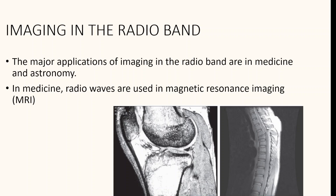The major applications of imaging in the radio band are in medicine and astronomy. In medicine, radio waves are used in magnetic resonance imaging (MRI). This technique places the patient in a powerful magnet and passes radio waves through the individual's body in short pulses. Each pulse causes a responding pulse of radio waves to be emitted by the patient's tissues, and a computer produces a two-dimensional image of a section of the patient. This figure shows MRI images of the human knee and spine.